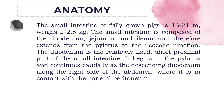For the anatomy, the small intestine of fully grown pigs is 16 to 21 meters and weighs 2 to 2.5 kilograms. The small intestine is composed of the duodenum, jejunum, and ileum, and therefore extends from the pylorus to the ileocolic junction.